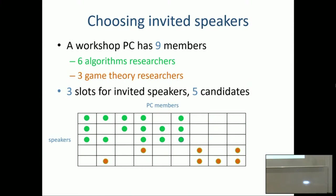The speakers have a bit of mixed appeal — broadly, some are more game theory and some are more algorithms speakers. The last two speakers are game theory speakers. The question I want to ask is: should there be a game theory speaker at this workshop? Different people can answer this differently. But throughout this talk, I want to make an argument that there should be a game theory speaker, and we want decision procedures that ensure there is one.